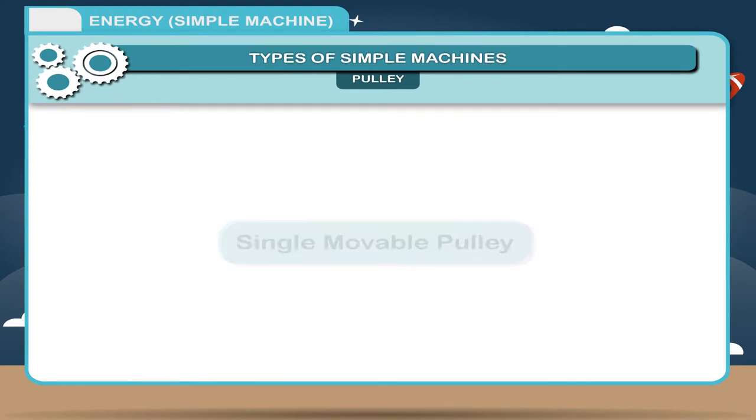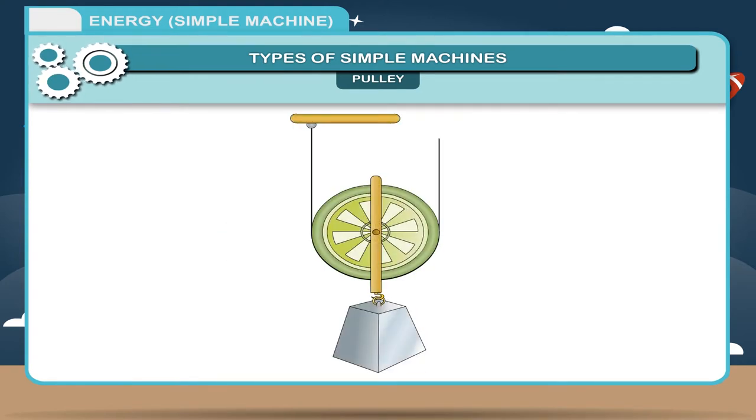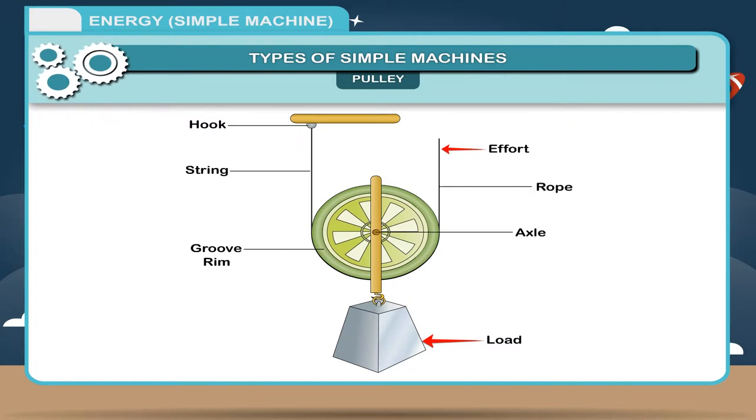Single movable pulley: Single movable pulley is a pulley which has a free axle to move in space. A string passes through the groove in the rim of the pulley. One end of the string is tied to the hook and the effort is applied to the other end of the string. The load is attached to the pulley. A single movable pulley has a mechanical advantage of two. It is because each part of the rope supports half of the load. If the axis of the rotation of a pulley is not fixed, it is called single movable pulley.